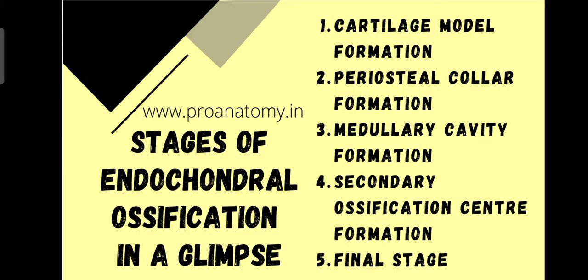Let's see which are the stages of endochondral ossification. The first one is cartilaginous model formation. Later there will be periosteal collar formation, then medullary cavity formation, secondary ossification center formation, and the final stage is complete bone formation. These are the five stages and we will be seeing each of them in detail.